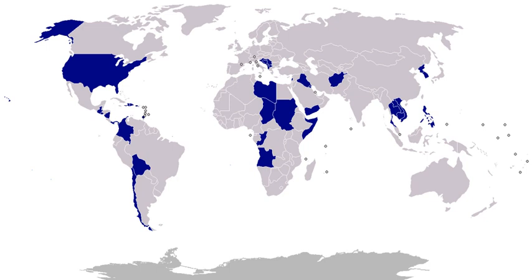1801–1805, First Barbary War: a series of naval battles in the Mediterranean against the Kingdom of Tripoli, a quasi-independent state of the Ottoman Empire. Action was in response to the capture of numerous American ships by the infamous Barbary Pirates. The federal government rejected the Tripolitan request for an annual tribute to guarantee safe passage, and an American naval blockade ensued. After the seizure of USS Philadelphia, American forces under William Eaton invaded coastal cities. A peace treaty resulted in the payment of a ransom for the return of captured American soldiers and only temporarily eased hostilities.